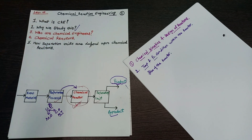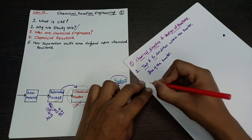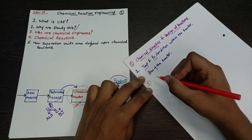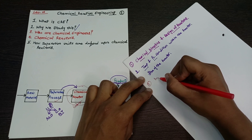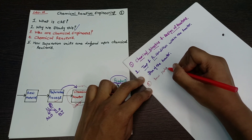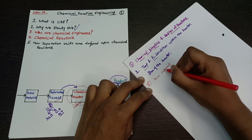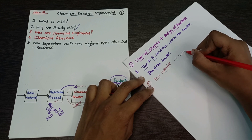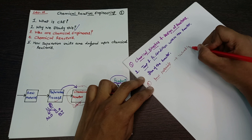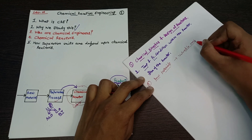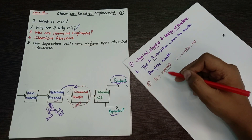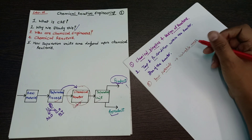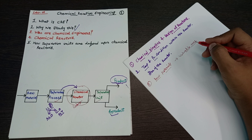Now, who are chemical engineers? Chemical engineers are those who convert raw materials into valuable ones — raw materials or chemicals into valuable chemicals. Whatever the raw materials are and whatever we get as a final product, chemical engineers make that happen.